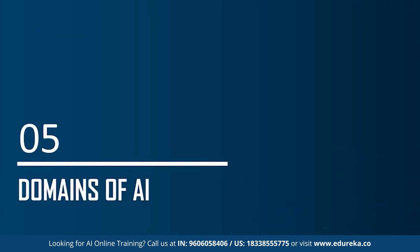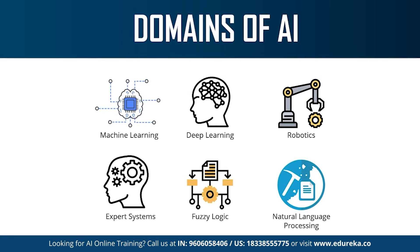Moving on to the last topic: the different domains or branches of artificial intelligence. AI can be used to solve real-world problems by implementing machine learning, deep learning, natural language processing, robotics, expert systems, and fuzzy logic. AI has also been applied in computer vision and image processing. Machine learning is the science of getting machines to interpret, process, and analyze data to solve real-world problems — including supervised, unsupervised, and reinforcement learning. Deep learning is the process of implementing neural networks on high-dimensional data to gain insights and form solutions.